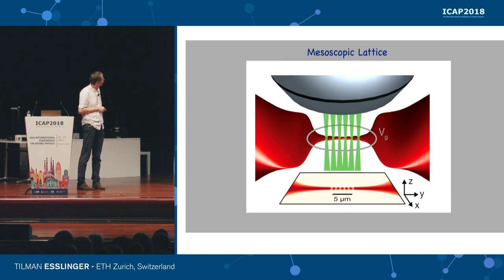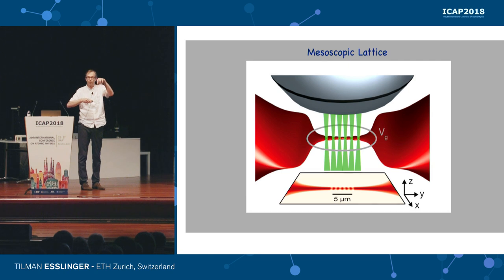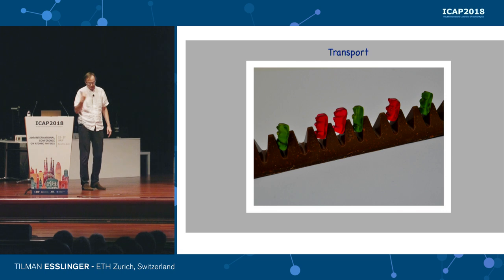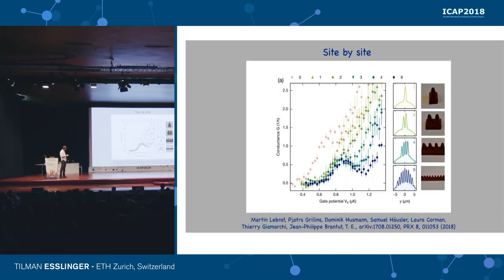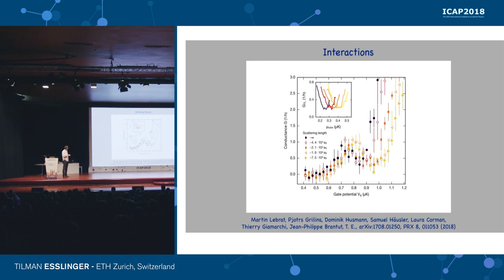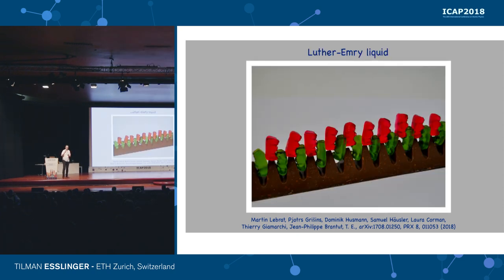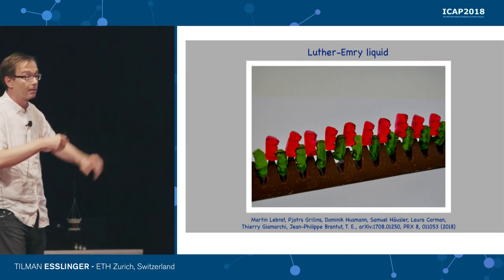Very briefly, let's look at another situation: putting a lattice between two containers, creating it by individually producing lattice sites. It's like transport through a chain of sites for spin-up and spin-down particles, and one can indeed see a band structure appearing once you have around four sites. Doing the same experiment with strong interactions, in the superfluid regime, we again see something like a band structure, and the reason is that a Luttinger-Emery state is formed — essentially a strongly correlated gas with two particles localized per periodic site.